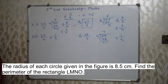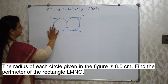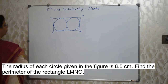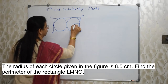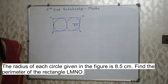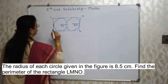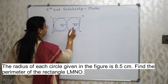The radius of each circle given in the figure is 8.5 cm. Find the perimeter of the rectangle LMNO. I have drawn the figure on the board. Observe the circles drawn inside — they are identical and they are touching the sides of the rectangle. The radius of each circle is 8.5 cm. We need to find out the perimeter of this rectangle, so we need the length and the breadth. How can we find them using this radius?